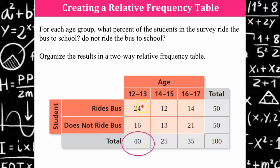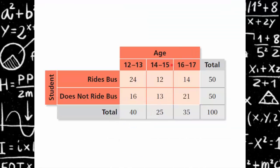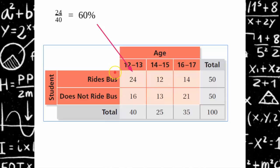To find the relative frequency of how many students in the 12 to 13 age group ride the bus, I need to do 24 divided by 40 which is 60 percent. We're going to start to create our relative frequency table here. We have our percent so you're going to replace the cell with 60 percent.